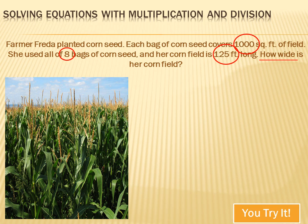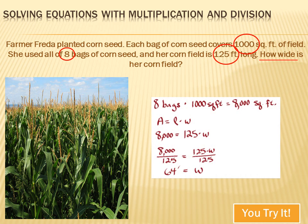And we know that she used eight bags of corn seed. For each of those eight bags, she covered 1,000 square feet. So, in total, she covered 8 times 1,000, or 8,000 square feet. Now, we know that the area equals the length times the width.